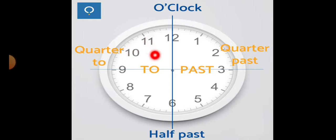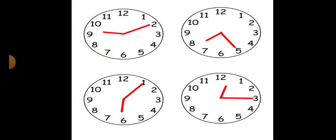If 15 minutes are past, you will say quarter past. And if half of the clock is done, you will say half past. If you are moving here, you will say some minutes to that digit. Or if 15 minutes are left, you will say quarter to that.